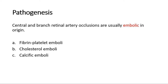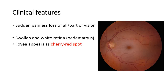Clinical features include sudden onset, painless loss of vision. The signs we can see on fundoscopy are a swollen and white retina, and the fovea will appear as a cherry red spot, as we can see here. There is also paleness in the retina.